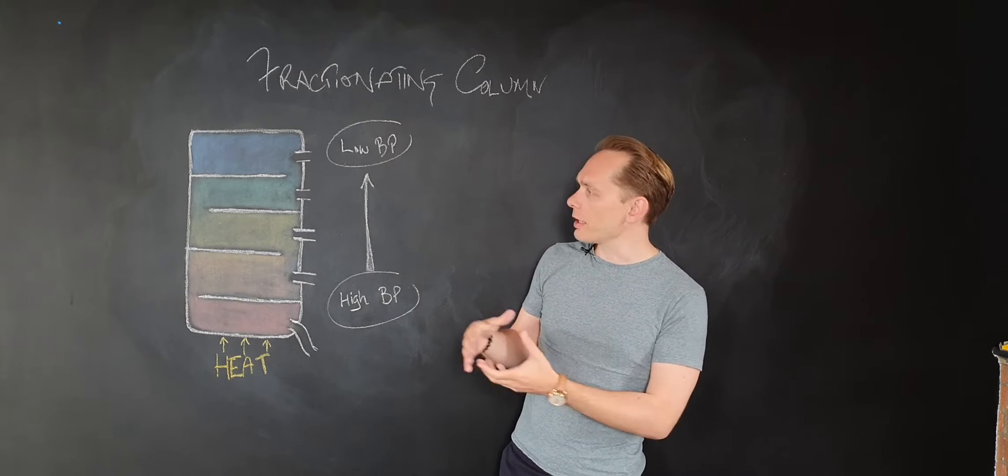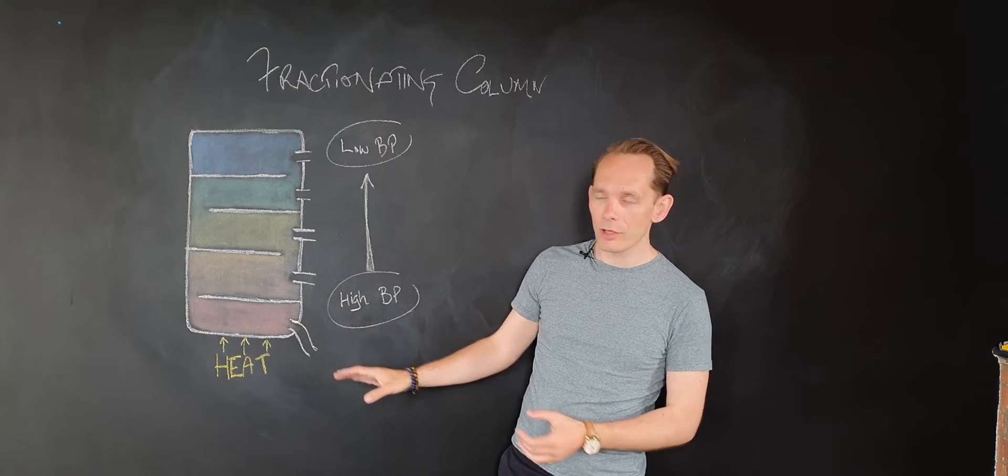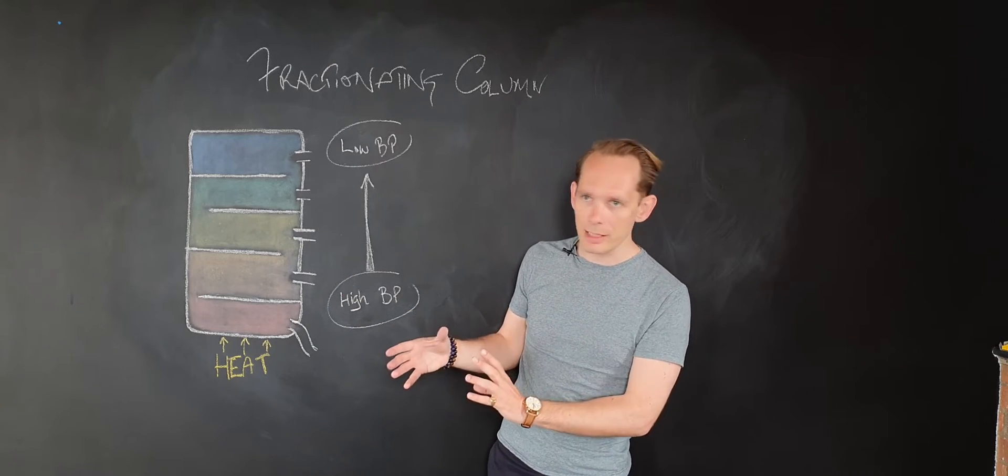So how do we make these? Well, they're separated in essentially a fractionating column. This is a very simplified version and I've drawn it this way just to help you remember the key facts.